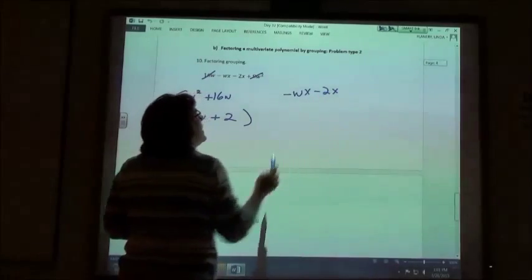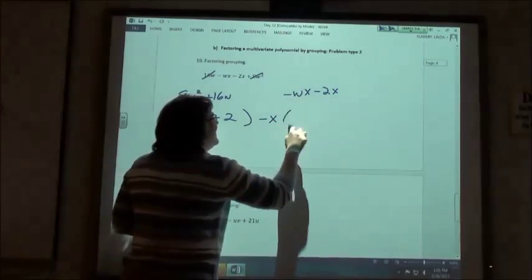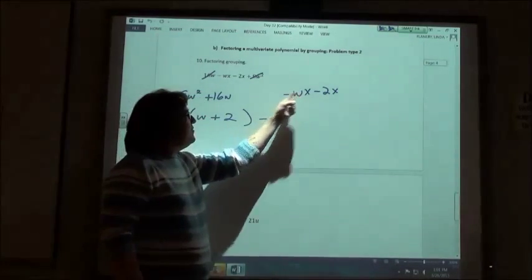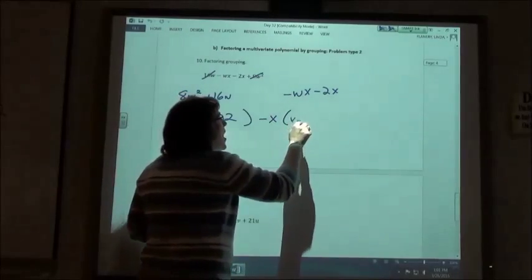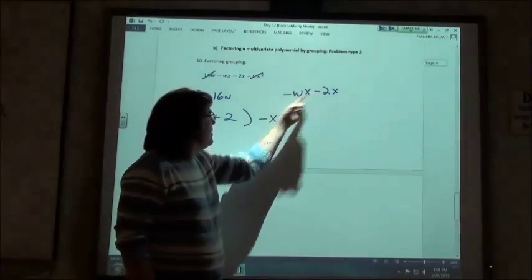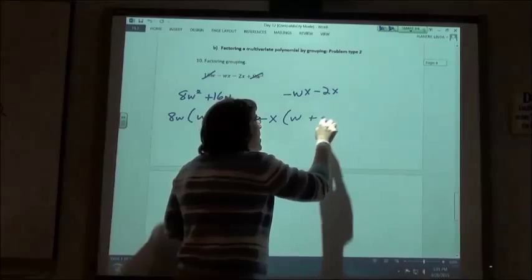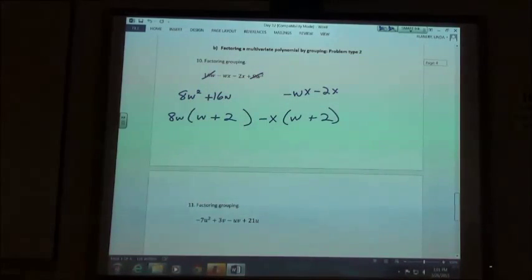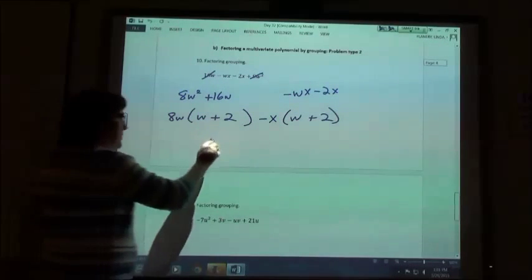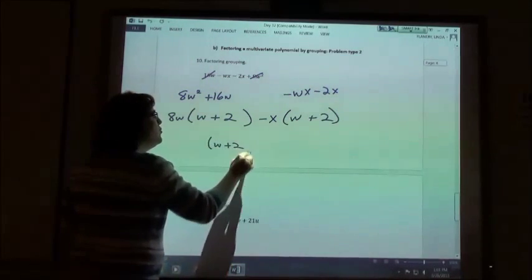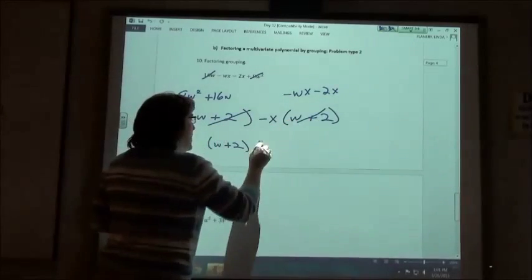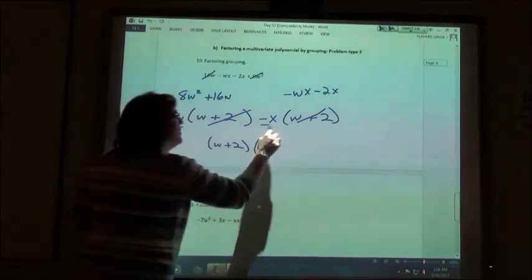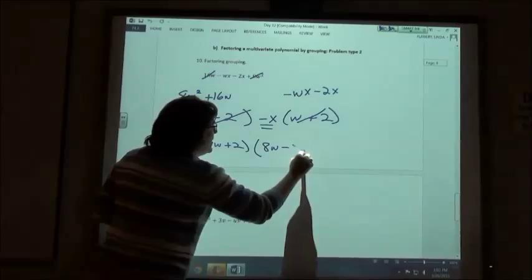You can see they both have an x in common here. So negative divided by a negative is going to leave me the positive w. Negative divided by a negative is going to leave me a positive 2. So my common factor, it's the w plus 2. My other factor, the 8w minus x.